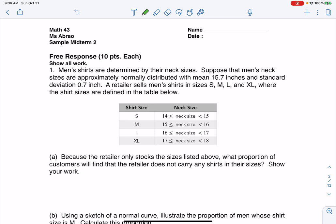Hey, Math 43, let's start to take a look at our sample exam, and we've got our first question, the free response question. It says men's shirts are determined by their neck sizes. Suppose that men's neck sizes are approximately normally distributed with a mean of 15.7 inches and a standard deviation of 0.7 inch.